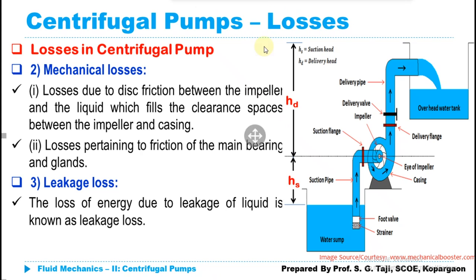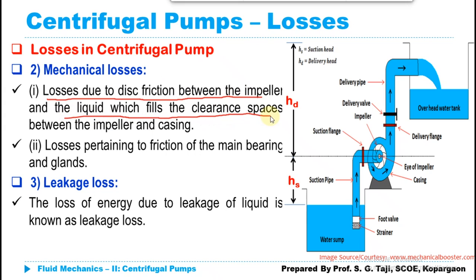Now, some mechanical losses. Mechanical losses are losses due to friction between the impeller and the liquid which fills the clearance spaces between the impeller and casing, and again losses pertaining to the friction of the main bearing and gland. So mechanical losses are those losses which take place due to the wearing and tearing effect.